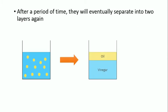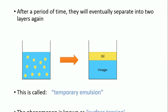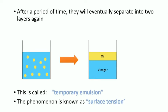After a period of time, they will eventually separate into two layers again. This is called temporary emulsion. The phenomenon is known as surface tension.